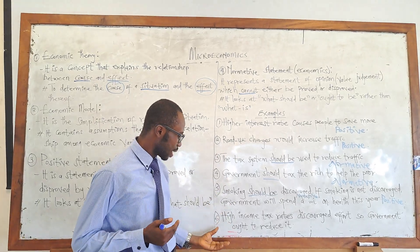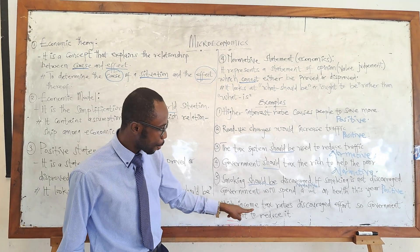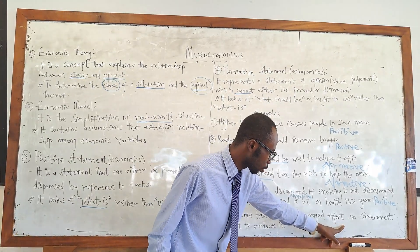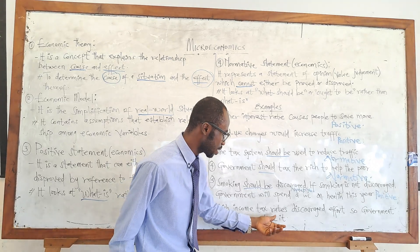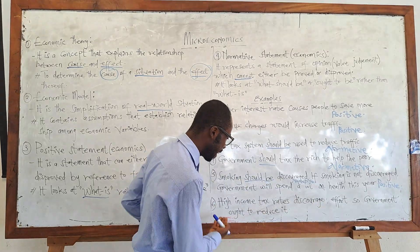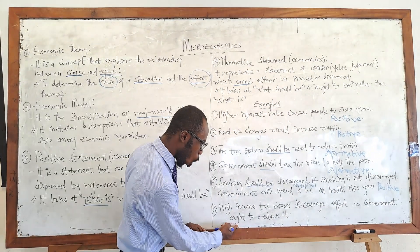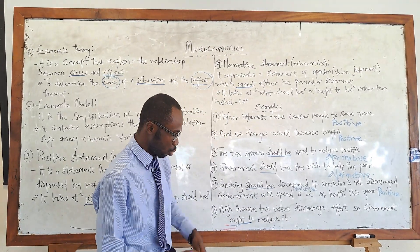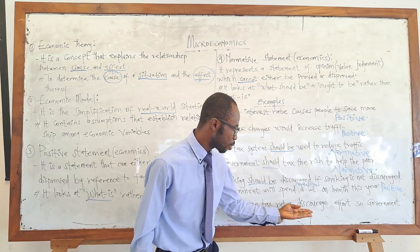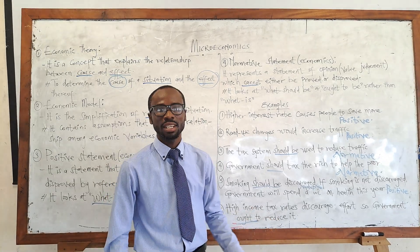Example six: 'High income tax rates discourage efforts' — that is a positive statement. 'So government ought to reduce it' — that is a normative statement. So high income tax rates discourage efforts is positive, and government ought to reduce it is normative.